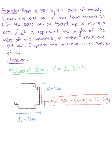The same thing occurs with the length. Right here is our new length. Our original length started off with 30 inches, but now we're subtracting x plus x from each corner. So this is 30 minus 2x. We have our new length and our new width.